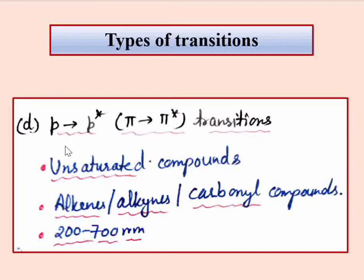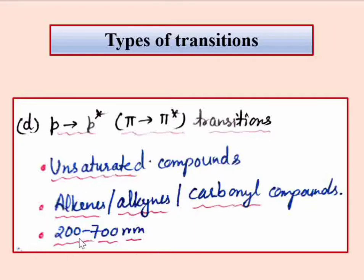The fourth transition type is pi to pi star (π to π*). For this, only unsaturation is required — compounds that are unsaturated, such as alkenes, alkynes, and carbonyl compounds. Note that a single molecule can show multiple types of transitions. For example, a carbonyl compound can show n to π*, π to π*, and σ to σ* transitions. The π to π* transition also absorbs in the 200 to 700 nanometer UV-visible range.